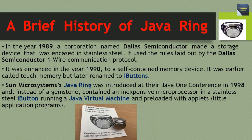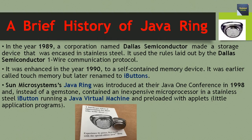In the year 1989, a corporation named Dallas Semiconductor made a storage device that was encased in stainless steel. It used the rules laid out by the Dallas Semiconductor one-wire communication protocol. It was enhanced in the year 1990 to a self-contained memory device. It was earlier called touch memory but later renamed to iButtons. Sun Microsystems Java Ring was introduced at their Java 1 conference in 1998, and instead of a gemstone, contained an inexpensive microprocessor in a stainless steel iButton running a Java Virtual Machine and preloaded with applets.